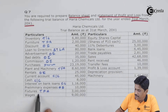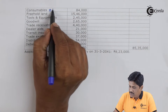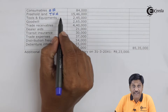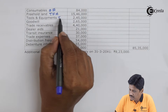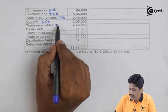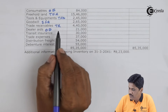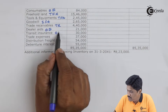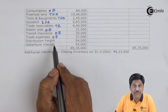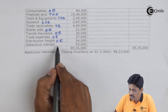Preliminary expenses are always written off as per AS 26 — other expenses. Fixture is your tangible fixed asset. Wages is your employee benefit expenses. Consumables is also your other expense. Freehold land is your tangible fixed asset. Tools and equipment — tangible fixed asset. Goodwill — intangible fixed asset. Trade receivable. Dealer aid is basically a selling expense — other expenses. Transit insurance is also your other expense. Trade expenses are also your other expenses. Distribution freight is also your other expense.